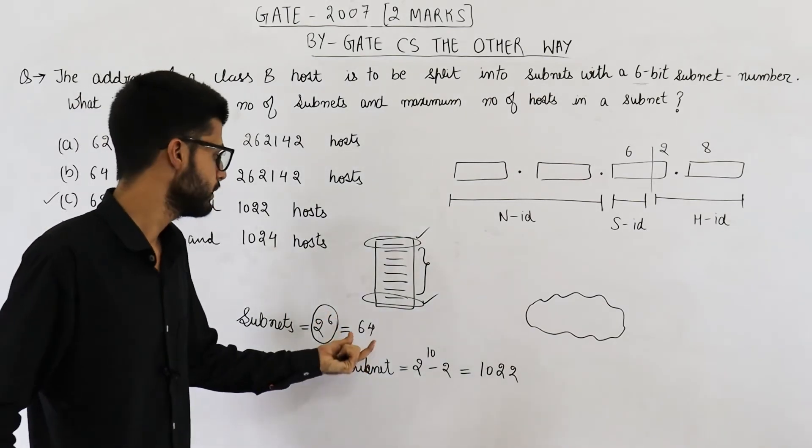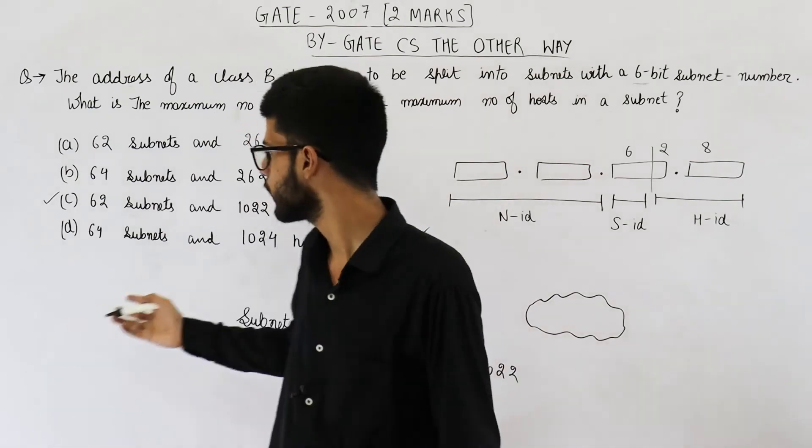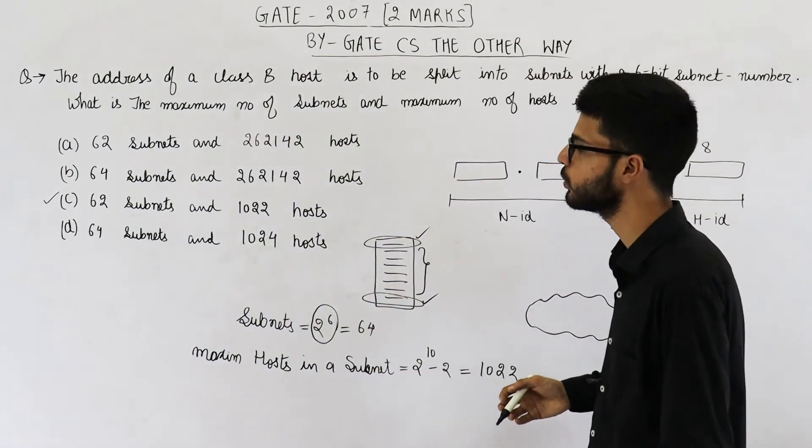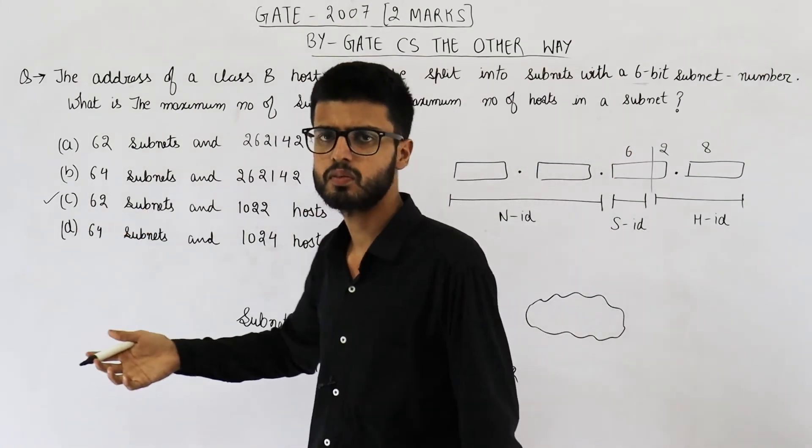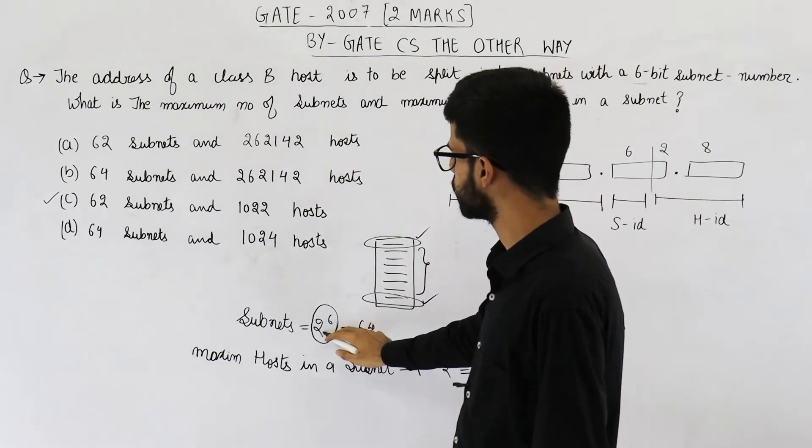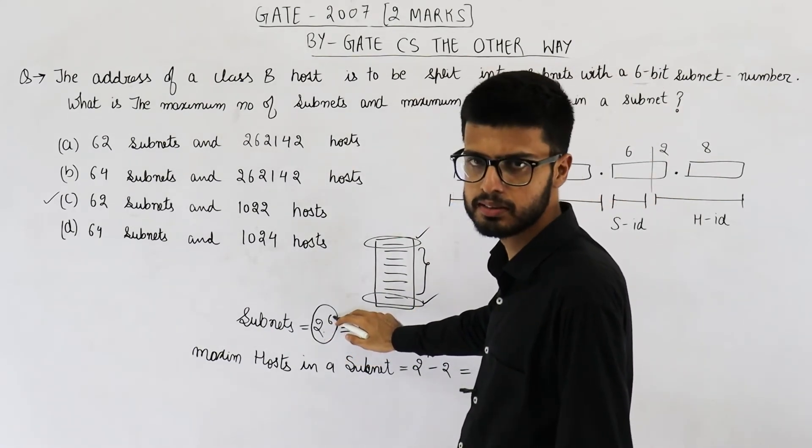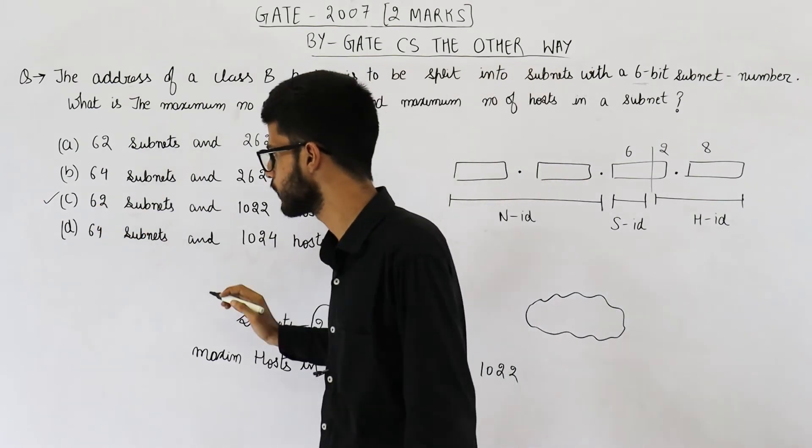So correct answer should be 64 and 1022. But because in options, you cannot find 64 and 1022, maybe they are using the older convention. So the formula that was used earlier was 2 raised to the power number of bits available in subnet ID minus 2. So you can see option C will be correct.